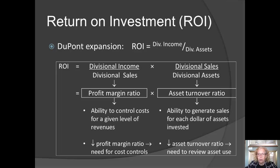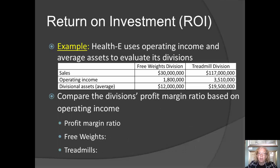The other ratio — divisional sales divided by divisional assets — is called the asset turnover ratio. It relates to the division's ability to use its invested assets to generate sales revenue. If that ratio is decreasing, that would suggest the division needs to consider whether it is using its invested assets in the best way. Remember, those assets really belong to the shareholders.